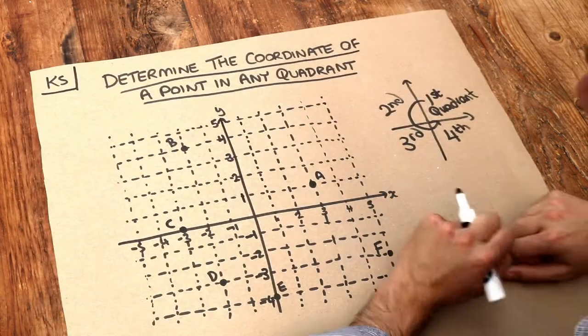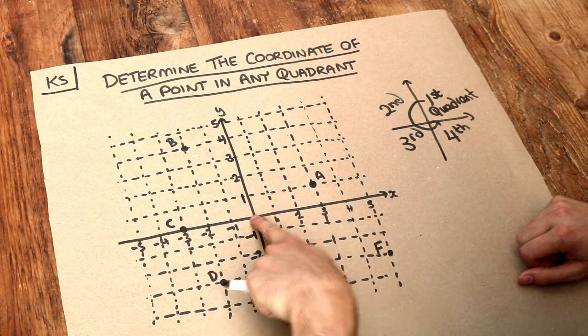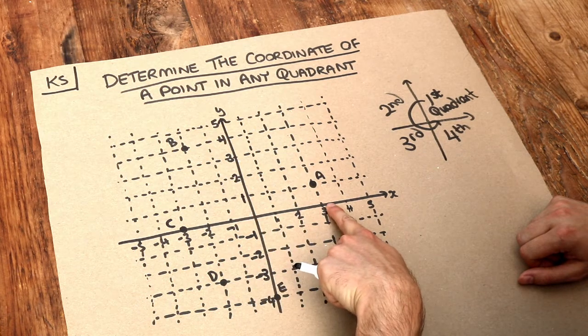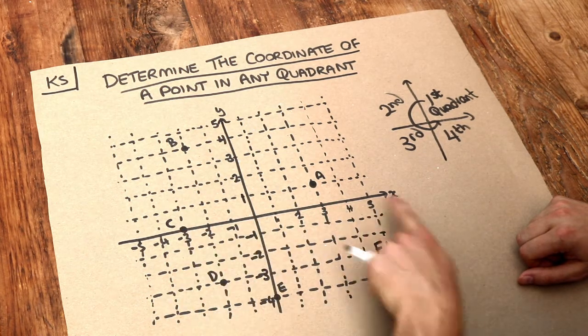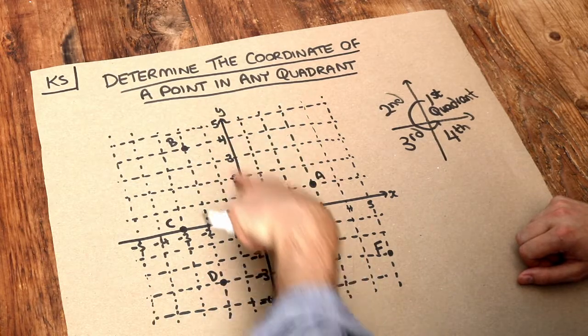So the principle is exactly the same as before. We just have to see for each of these points how far we have to go along the x-axis, this left-right number line, and how far we have to go along the y-axis, this up-down number line.